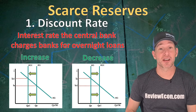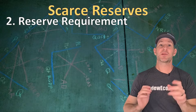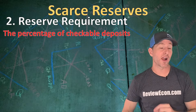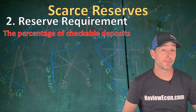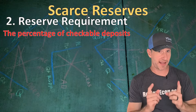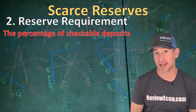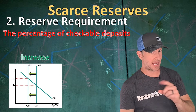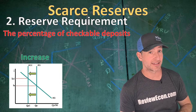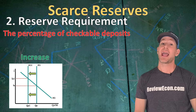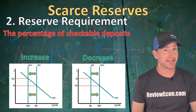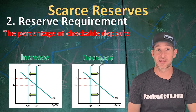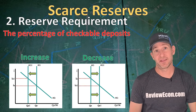New loans cause changes in the money supply. Next we have the reserve requirement — the percentage of checkable deposits or demand deposits that banks cannot loan out. If they increase the reserve requirement, banks loan out less, which decreases the money supply. If they decrease the reserve requirement, that increases the money supply in the money market.